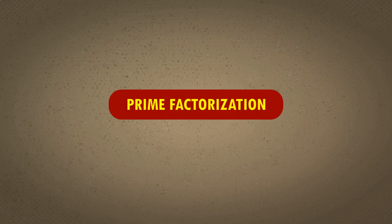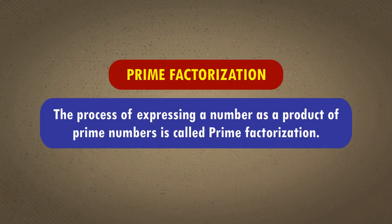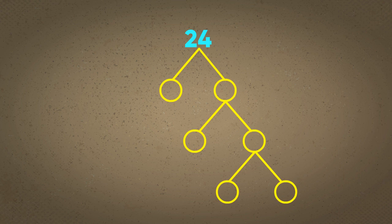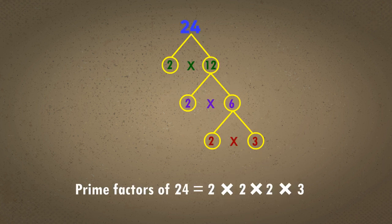Prime factorization. We have already learnt about prime factorization in our previous class. Let us do a quick revision. The process of expressing a number as a product of prime numbers is called prime factorization. For example, the number 24 can be factorized: 24 = 2 × 12, 12 = 2 × 6, and 6 = 2 × 3. Therefore, the factors of 24 are 2 × 2 × 2 × 3, which are all prime numbers.